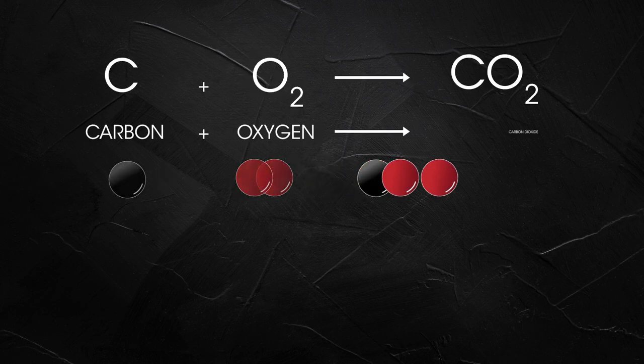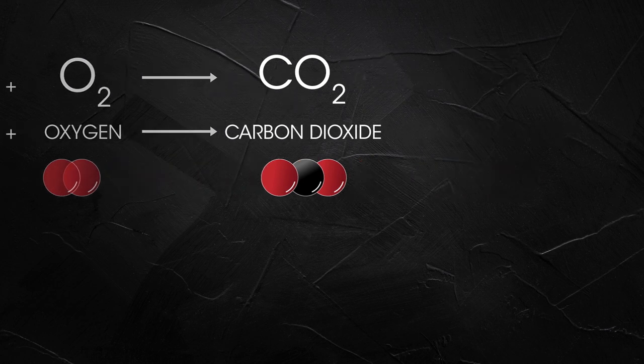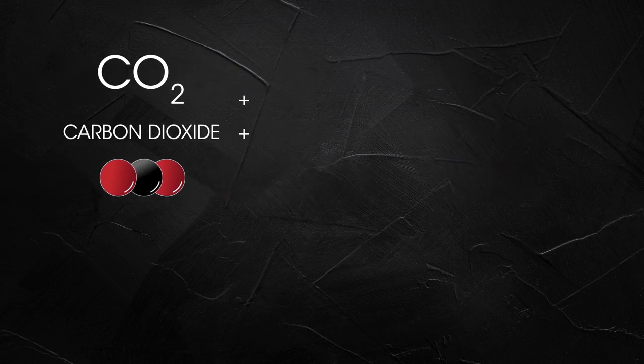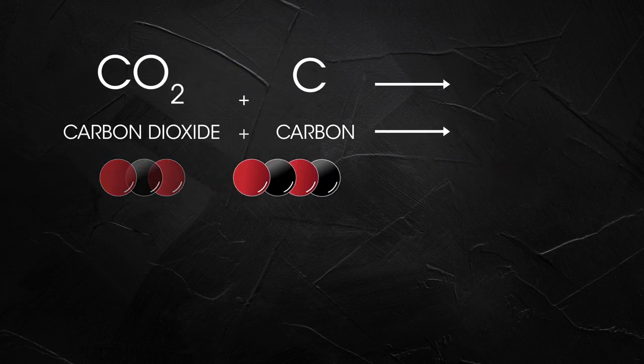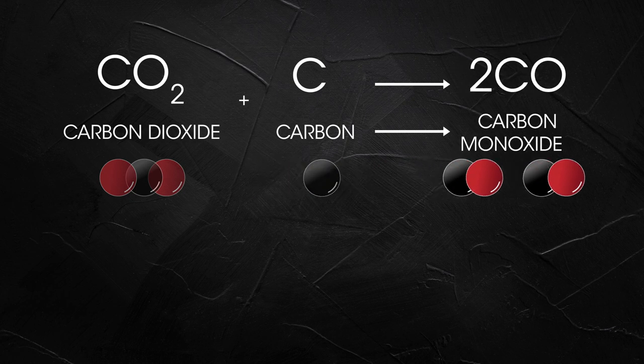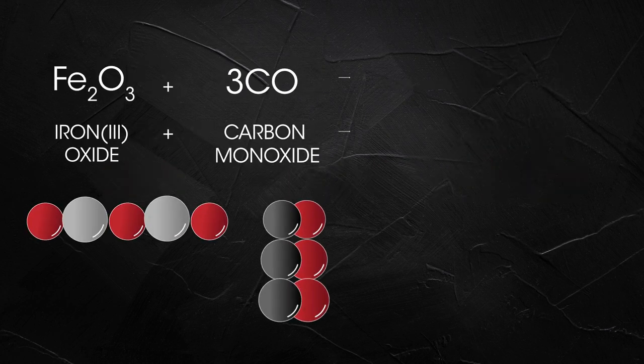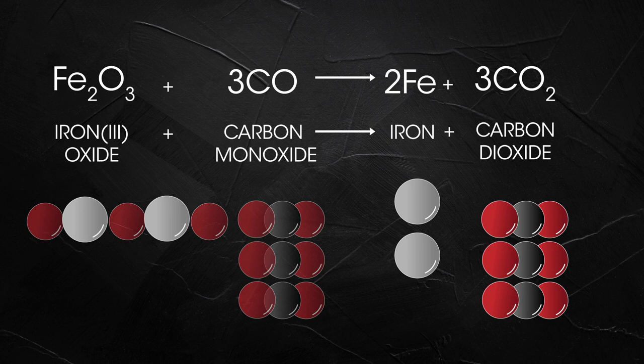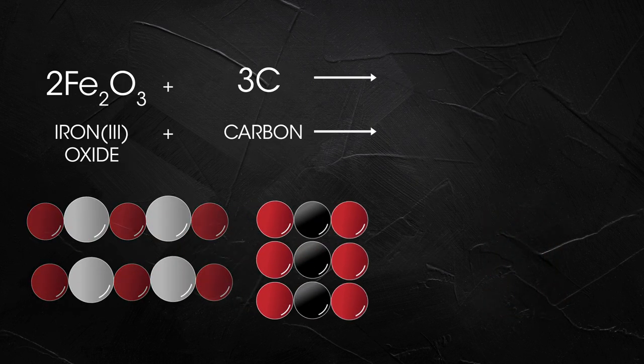The actual reaction is a three-step process. The carbon burns to produce carbon dioxide. The carbon dioxide reacts with more of the carbon to make carbon monoxide. The carbon monoxide then reduces the iron oxide to iron. The reduction reaction can be summarized as this.